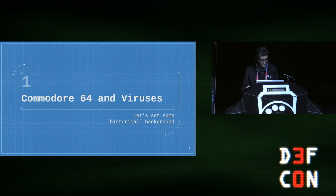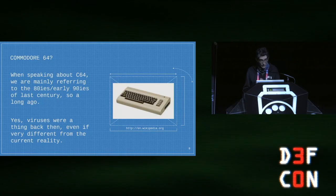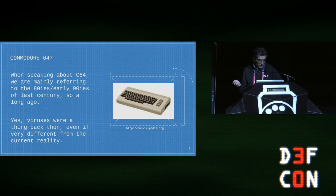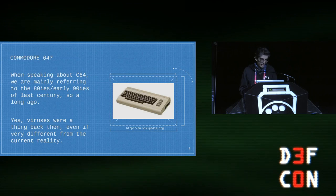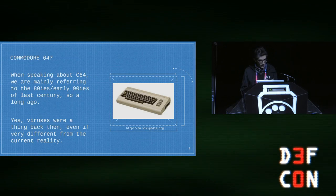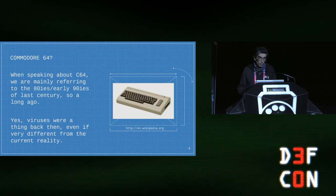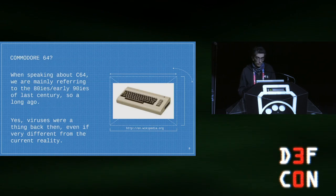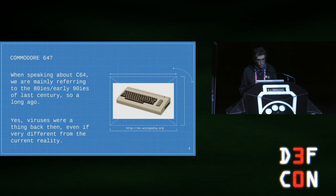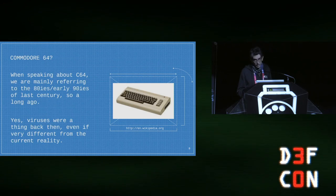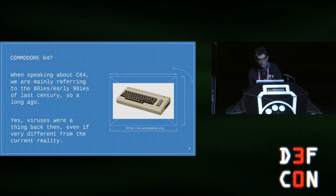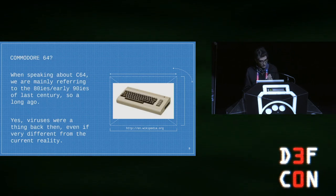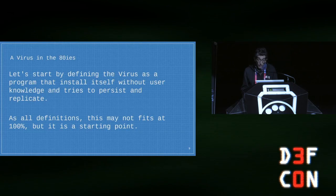Let's set some common historical background about the Commodore 64. This is a picture of it. In Italy, where I come from, it was called the 'Big Biscuit' because of the shape and color of the chassis. It was one of the first home computers, born in 1982, together with Apple II and many others. It was mainly used for gaming because of its special chipsets, but viruses were a thing back then — they existed, though very different from today's reality.